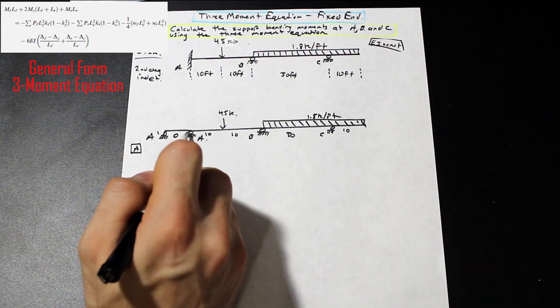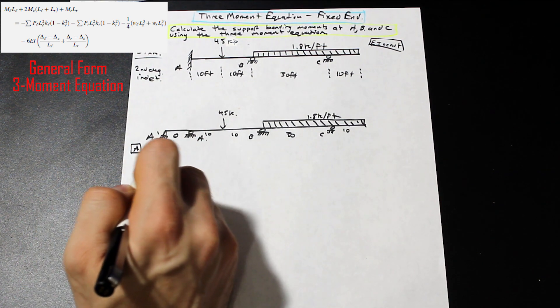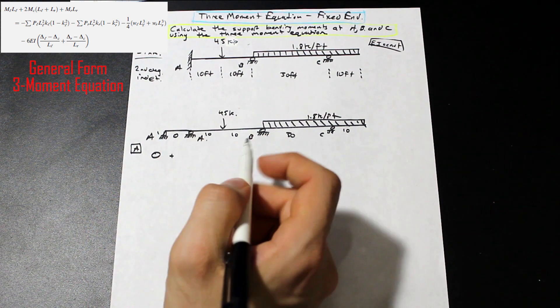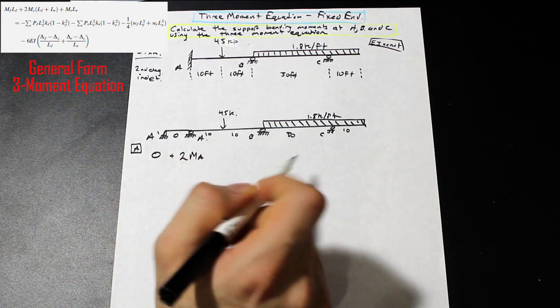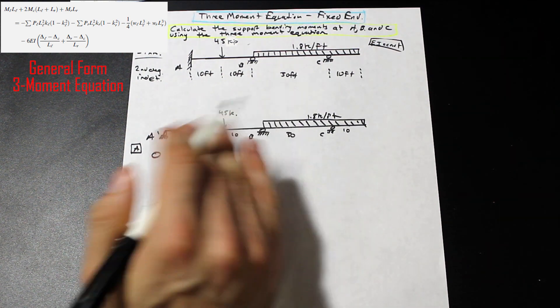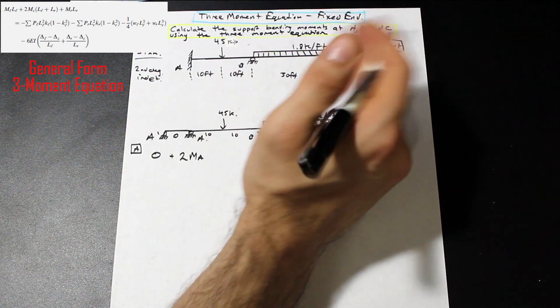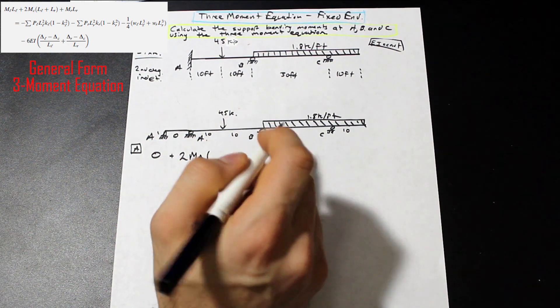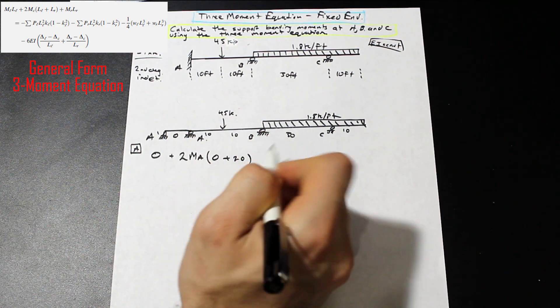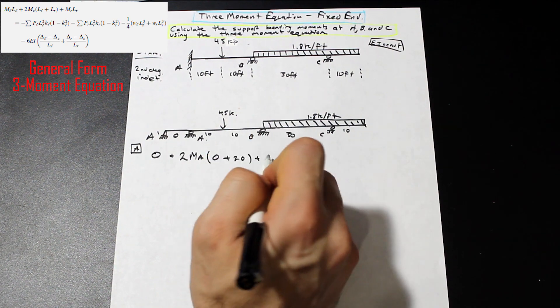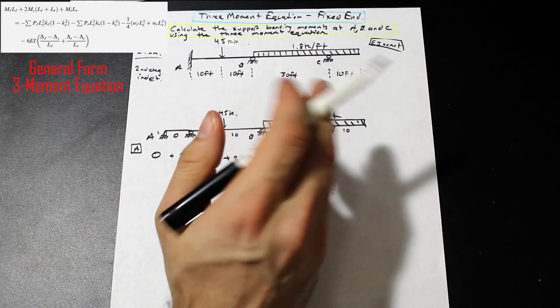We can go ahead and start with taking the redundant at A. Remember, we need to take two redundants because it's a second degree indeterminate structure. So we're going to take the ones in the middle here. Let's take a look at the screen for the three-moment equation there. We're at A. Let's take a look at the left. So the moment at the left, we have a pin that's at the end of the beam. So that's going to be equal to zero. So we have zero plus two. And what's the moment at A? Well, we don't know that yet. That's unknown. There is a moment at A, though, so don't make it that zero.